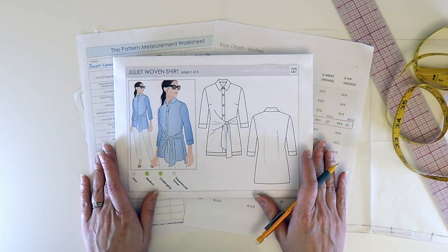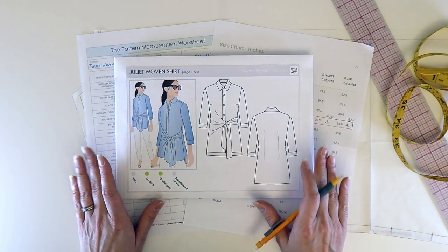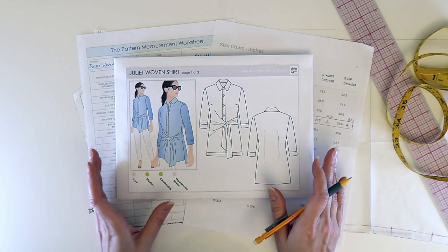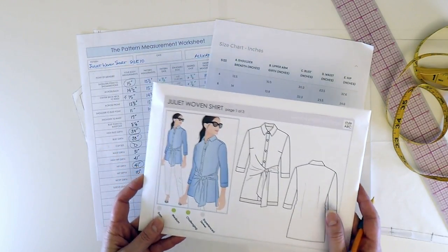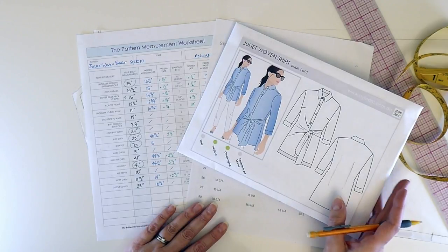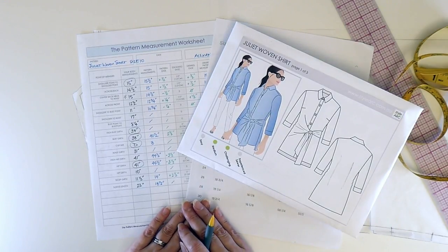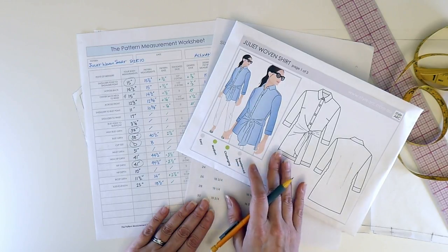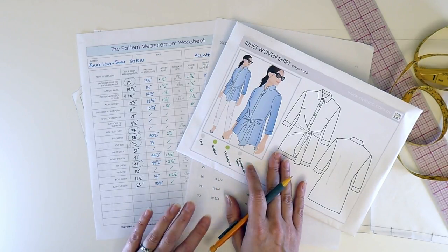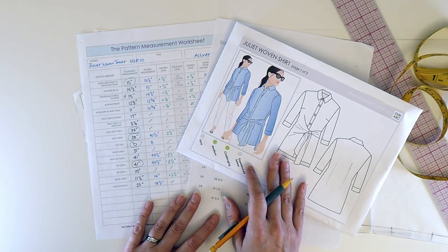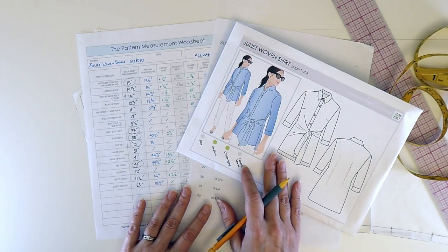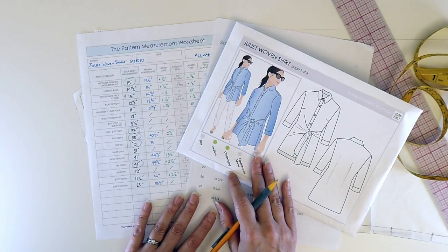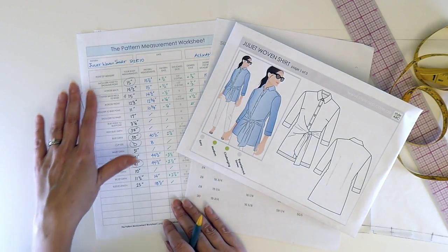So here we have the shirt that I was working on last week. It's the Juliet Woven Shirt by StyleArc. And what I did was take four body measurements. These four body measurements helped me determine my size, determine if I needed a cup size adjustment, which I pretty much knew I would have to, and also make some other final adjustments that really got me into stitching my sample up really quickly.